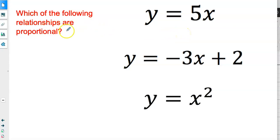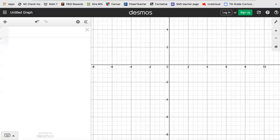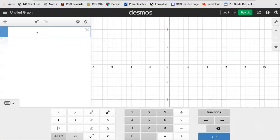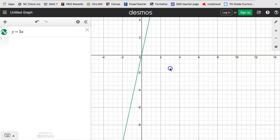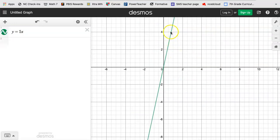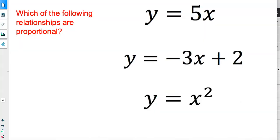So the question is, which of the following relationships are proportional? We're starting with y = 5x. We're just going to type it into DESMOS, y = 5x. And you can see that on DESMOS, this y = 5x was graphed. It's a straight line that goes through (0, 0), so that's proportional. I'm just going to put a check by this one.